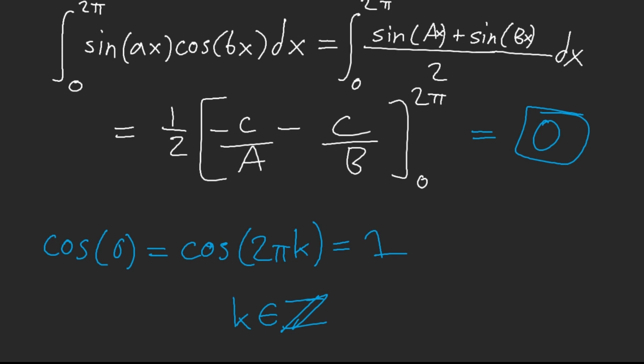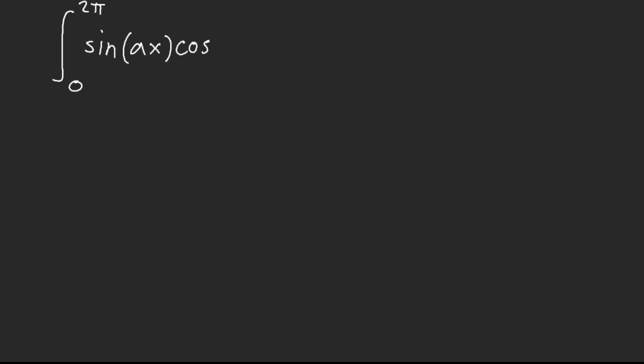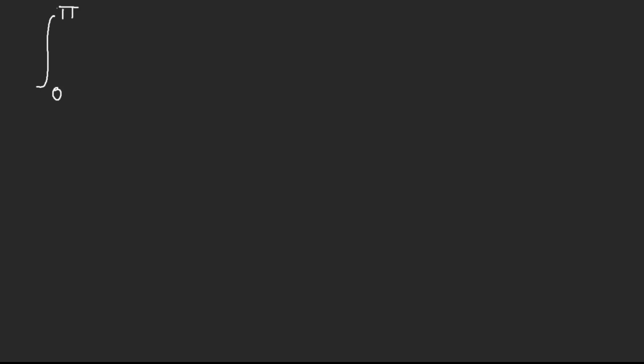And it works the same exact way with sine and sine, and cosine and cosine. Here, for example — let me do another example conceptually. Let's say instead of 2π, we have π, and we have something like sine(αx) times sine(βx), whatever the coefficients are.